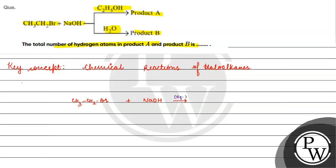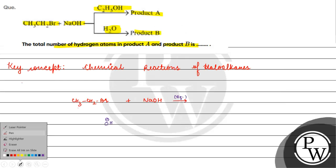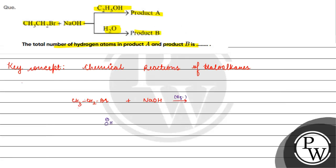We have OH acting as a nucleophile. It will attack our electrophilic center. Which one will be the electrophilic center? This electrophilic center, because bromine which is on carbon will be more electronegative. Electron density is drawn away, so we have partial positive charge and partial negative charge. This OH acts as a nucleophile and attacks the electrophilic center.